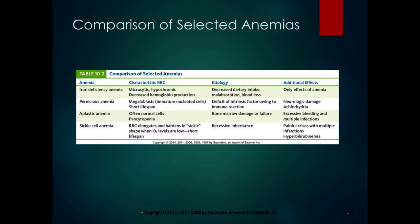These are the different types of anemias summarized in a chart from the book, which boils things down into a nice organized package.